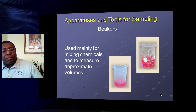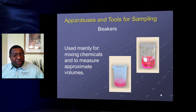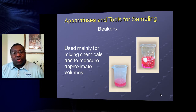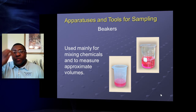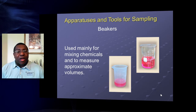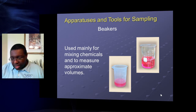Beakers are mainly used for mixing or measuring chemicals. They come in glass or plastic with milliliter markings. To get an accurate reading, hold the beaker up to eye level and look for the meniscus — don't look down at it.